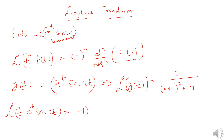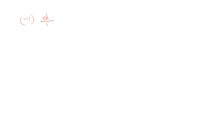So the Laplace of t·e^(−t)·sin(2t) will be equal to minus 1 to the power 1, times d over ds — only one derivative because the power of t is 1 — multiplied by the function of s, which is 2 over (s+1)² plus 4. Now we take the derivative.